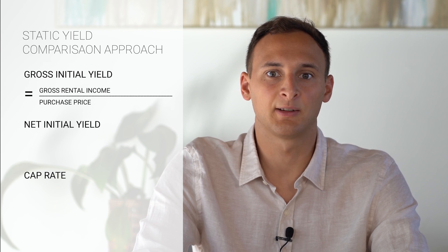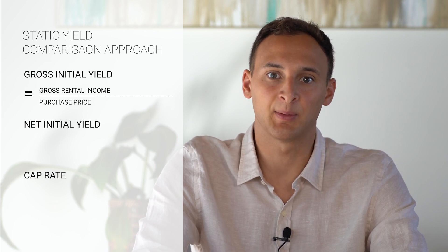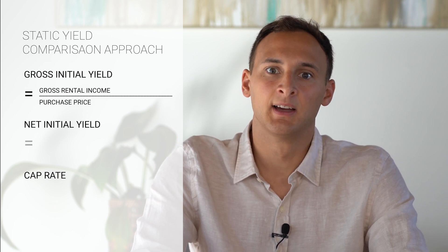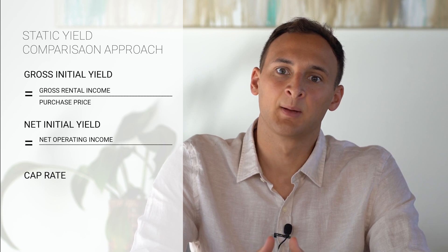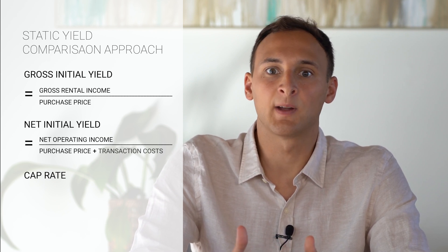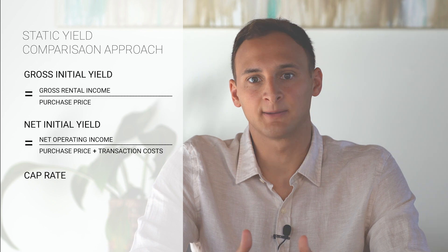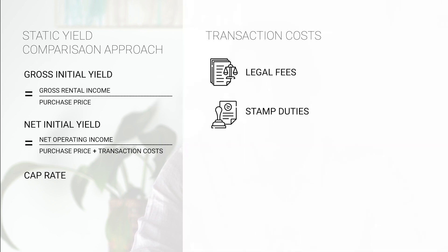In order to calculate the net initial yield of the property, you have to divide the net operating income by the purchase price plus the transaction costs. Examples of transaction costs are legal fees, stamp duty, and in some cases brokerage fees.